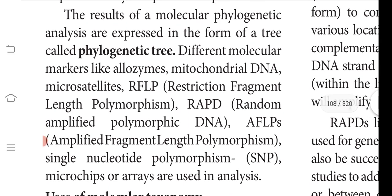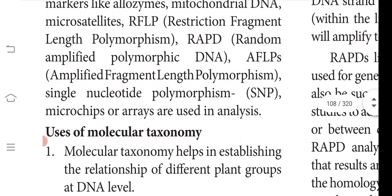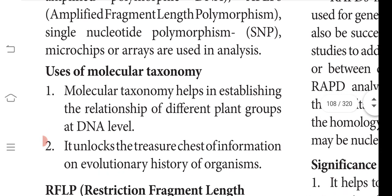The results of molecular phylogenetic analysis are expressed in the form of a tree called a phylogenetic tree. Different molecular markers like allozymes, mitochondrial DNA, microsatellites, RFLP (Restriction Fragment Length Polymorphism), RAPD (Random Amplified Polymorphic DNA), AFLP (Amplified Fragment Length Polymorphism), Single Nucleotide Polymorphism, and microchip arrays are used in this analysis to establish relationships among plant groups at the DNA level.